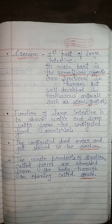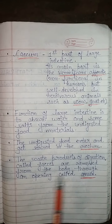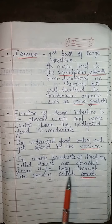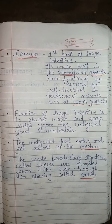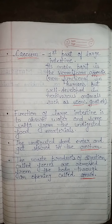Undigested food enters and gets stored in the rectum. Water absorb ho gaya, some salts bhi absorb ho chuki hain. Ab jo aur bhi waste material bacha — humara undigested food — woh enter karega rectum mein, wahan jake temporarily store ho jayega. Iske baad woh body se release hoga. The waste products of digestion called feces are removed from the body through an opening called anus. Woh opening bilkul last mein hoti hai, usse kehte hain anus, wahan se yeh sara material body se remove ho jaata hai.